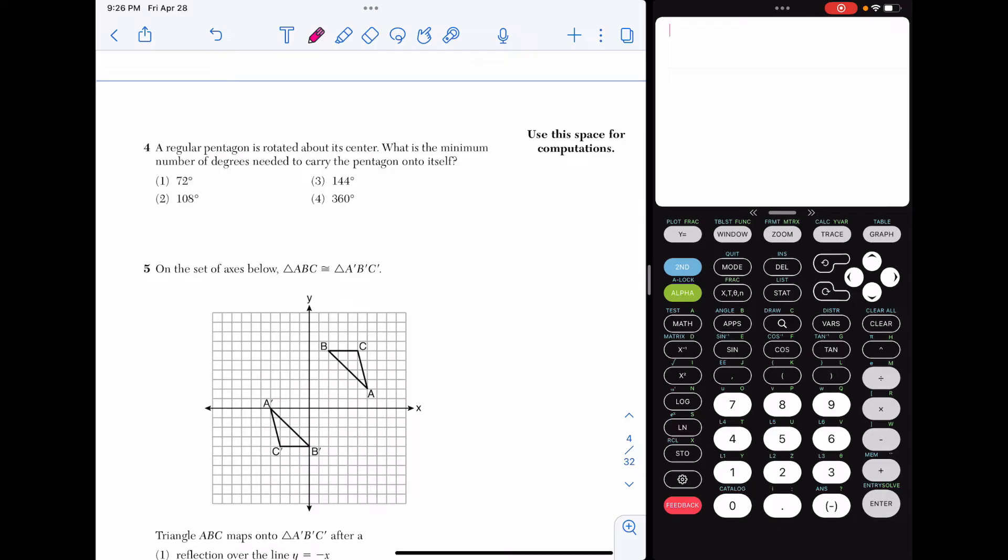Number four, a regular pentagon is rotated about its center. What is the minimum number of degrees needed to carry the pentagon onto itself? We're going to memorize here that this is 360 divided by the number of sides. So in this case, divided by five. And I get 72 degrees, choice one.